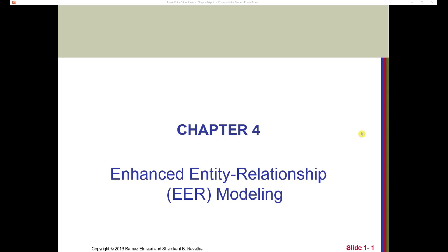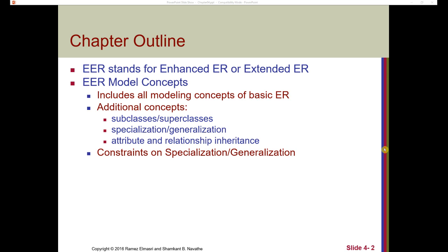In chapter four, we talk about enhanced entity relationship modeling. We're going to take what we've learned in chapter three and extend it to capture some other kinds of things we need to represent in a real business case. Chapter four lays out as follows. When we talk about the enhanced ER or extended ER, we use EER to describe this.